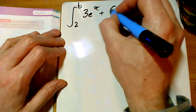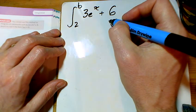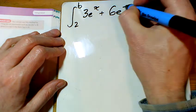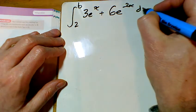Question 6: I've got the integral from 2 to b of 3e^x plus 6e^(-2x) dx.